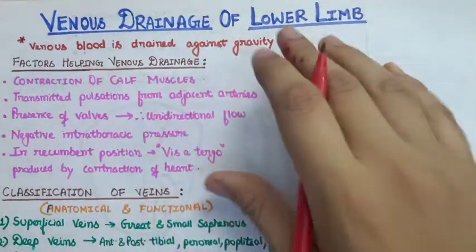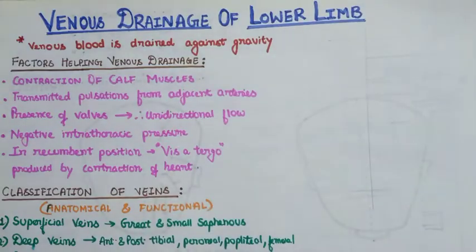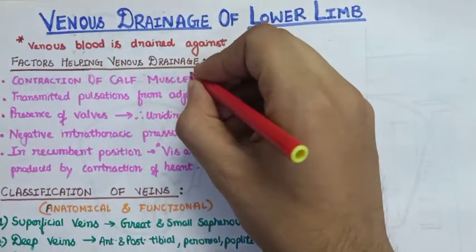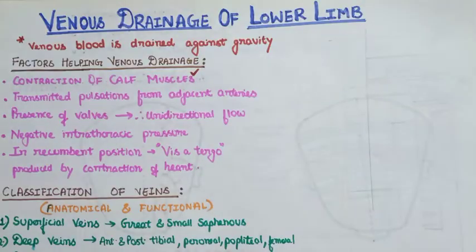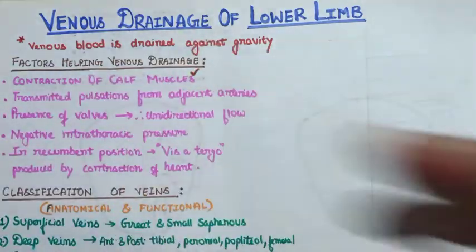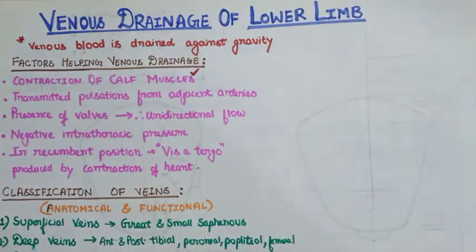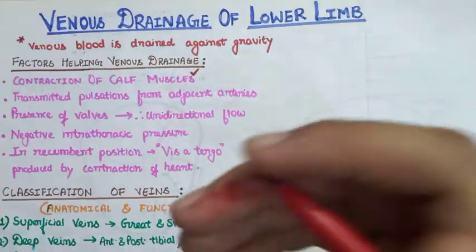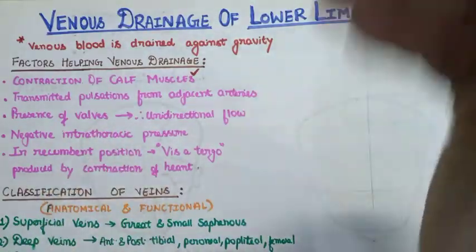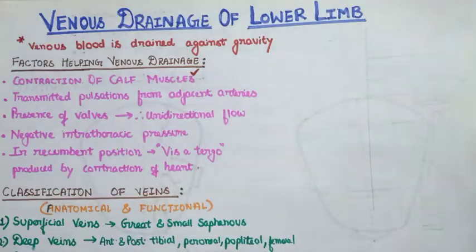There are many factors that help in the venous drainage of the lower limb. The first and most important factor is the contraction of the calf muscles. Calf muscles are the bulky muscles of the posterior part of the leg. When they contract, they pump the venous blood towards the heart.